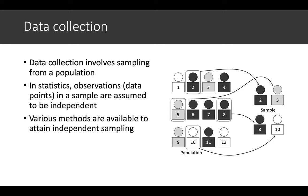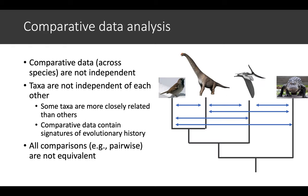However, in comparative data, so that's across-species data, when you're talking about biological biodiversity data, the comparative datasets are not independent. You're not really sampling randomly with respect to each other.